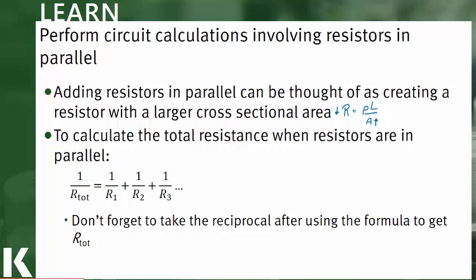One way I like to remember the differences between adding in parallel and in series: when we add in series, we are increasing the length of the resistor, and that's why we just have R1 plus R2 plus R3. I remember that because length is in the numerator, I just add like I would normally. However, when looking at resistors in parallel, because I'm increasing the cross-sectional area, and area is in the denominator, the way that I'm adding has one over the resistance. That's just one way to remember the difference between adding in series and adding in parallel based on the resistivity formula.